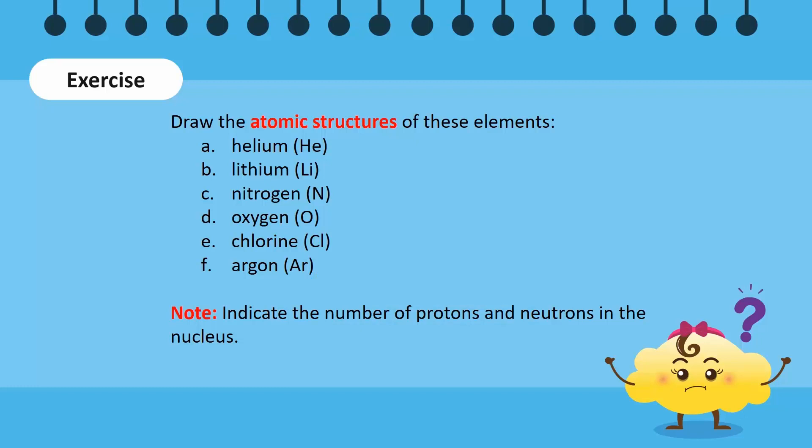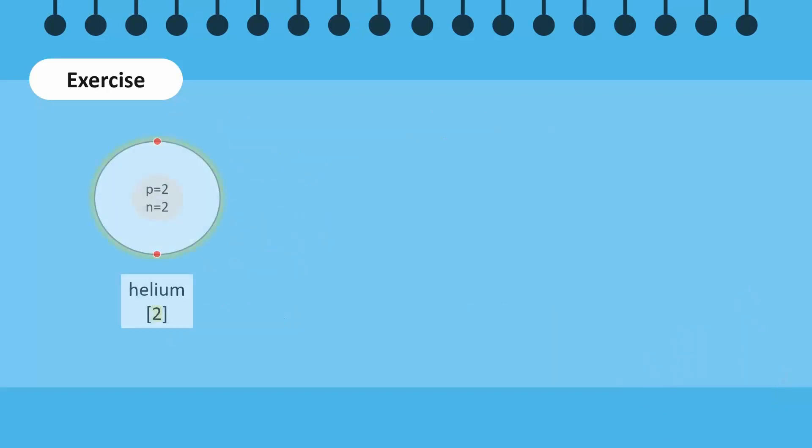Time for a quick exercise now. Helium has 2 electrons in its first shell. Its shell is complete. Lithium has total 3 electrons, 2 in the first shell and 1 in the second shell.